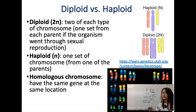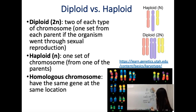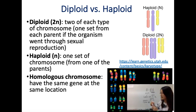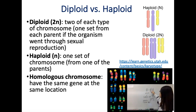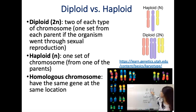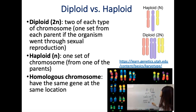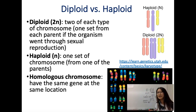Review: sister chromatids. On a duplicated chromosome, the left arm is one chromatid and the right arm is another — those two together are sister chromatids. With two duplicated homologous chromosomes, we have two chromosomes total, four chromatids total, and four DNA molecules instead of two, because everything is replicated.